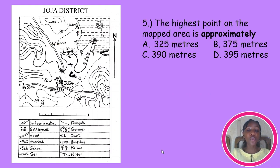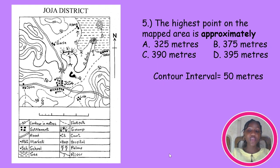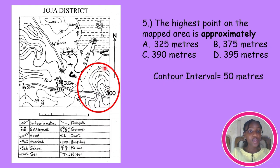The highest point on the map area is approximately — this question is tricky. We've already gotten our contour interval as 50 meters, but none of the options given are multiples of 50, so the word 'approximately' is key. Looking at the southeastern part of the map, we have our highest contour as 300. Counting up in intervals of 50: 50, 100, 150, 200, 250, 300 — the last one is 300. That is not among the options, but the closest answer would be option A, 325 meters.